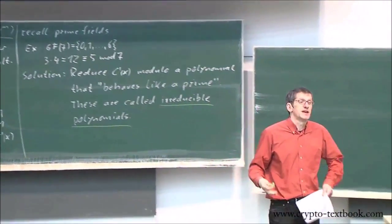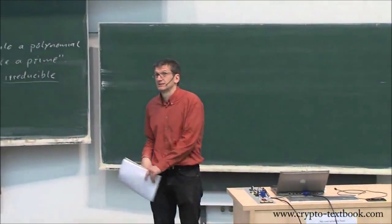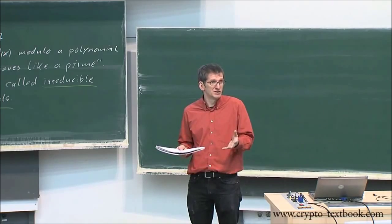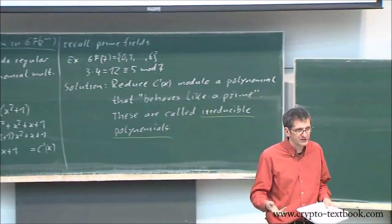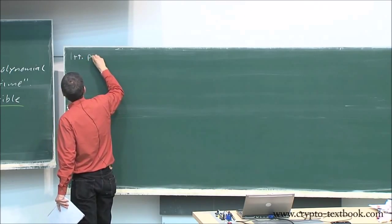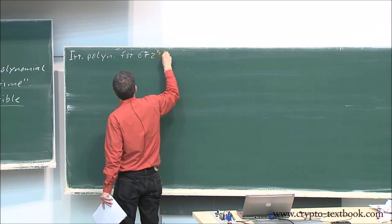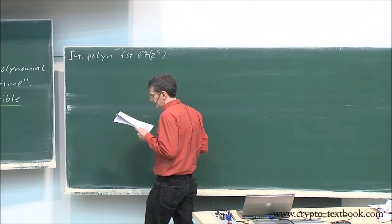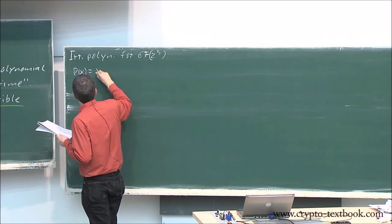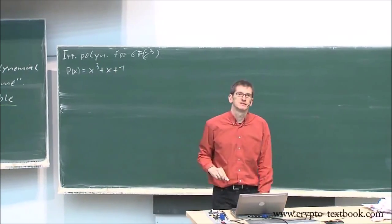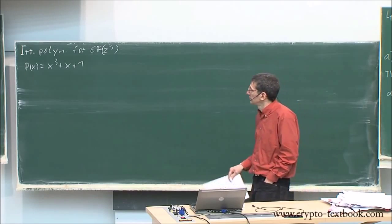What do I mean — behaves like a prime? Surprise: you cannot factor them. Seven cannot be factored — it's a prime. Fifteen is three times five — it can be factored, so it's not a prime. The same applies here: if you want to do modular reduction, you need a polynomial that cannot be factored. This is called an irreducible polynomial. For GF(2^3), the irreducible polynomial is x cubed plus x plus 1.